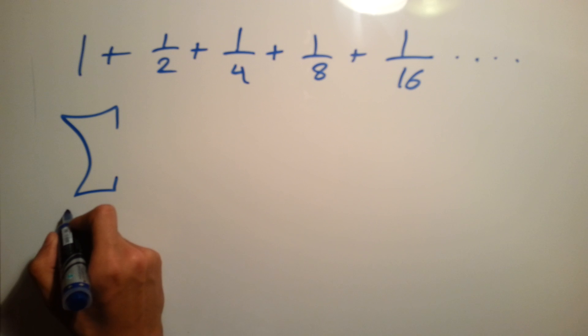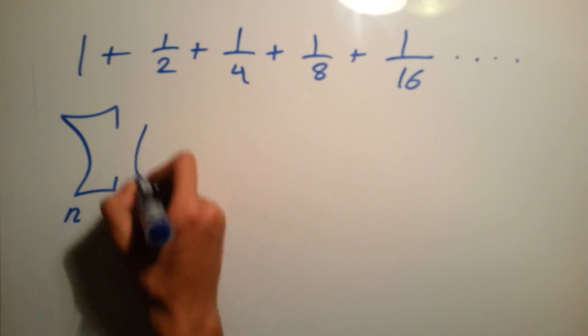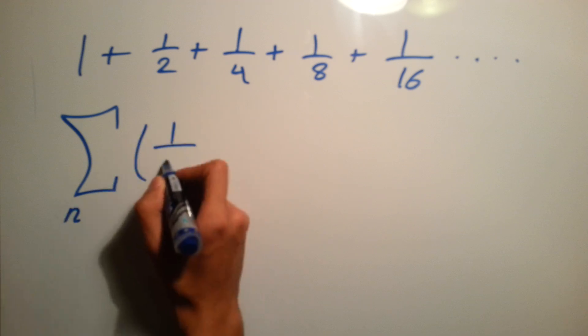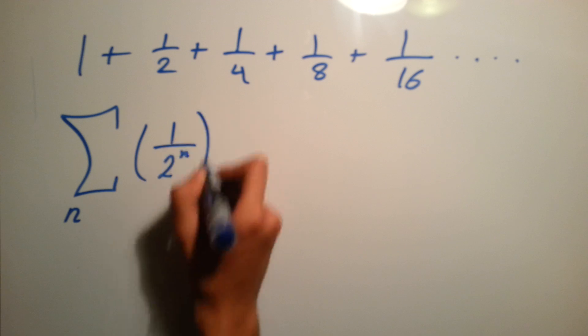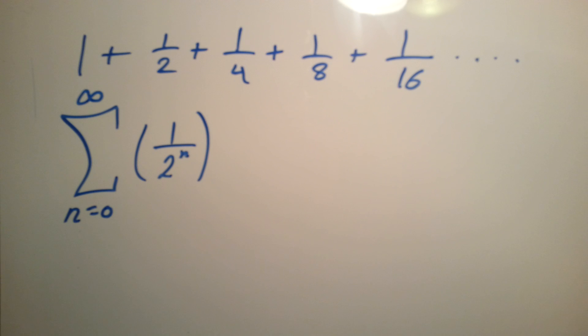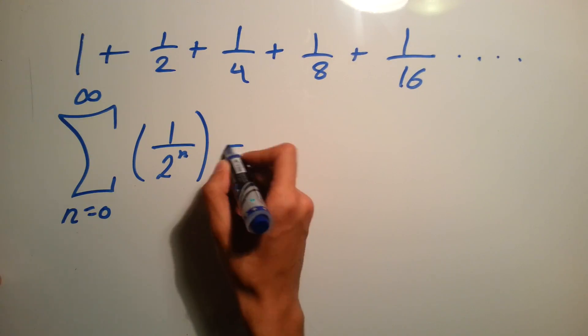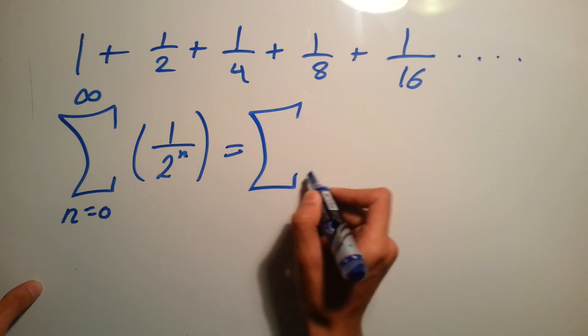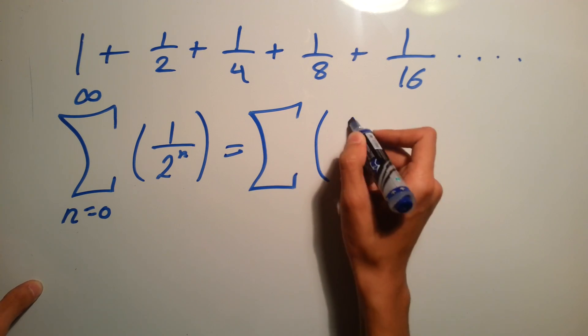It's the summation of (1/2)^n from n equals zero up to infinity. Because when n is zero it gives you one, and we can write this summation in a different shape as (1/2)^n from n equals zero up to infinity.